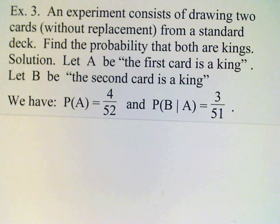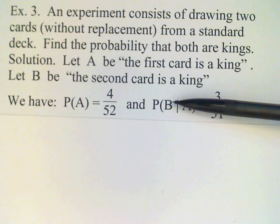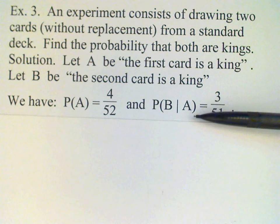Now once we've drawn that first king, then there are only three kings left in the deck to draw. So the probability of drawing the second card is a king, provided that we know the first card is a king, is 3 out of 51. You should be certain to see that this is a conditional probability. This is not the probability of B; this is the probability of B given A, if we know that the first card is a king.